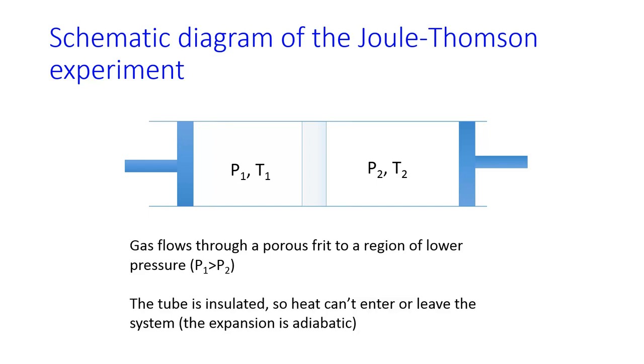So in your experiment, gas is going to flow through a porous frit from a region of high pressure and room temperature to a region of low pressure, which is going to be atmospheric pressure. And the temperature will change during this process. The tube is going to be insulated by some thick packing foam, so this expansion is adiabatic. And the packing foam is not going to look perfect, but it does do a pretty good job of keeping the system adiabatic.